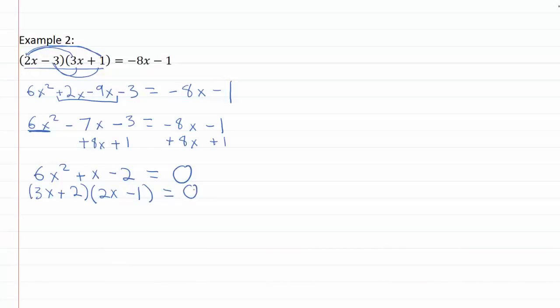So now I've factored and I can take each factor and set it equal to zero. Three x plus two equals zero, two x minus one equals zero. And then the last step is just to go ahead and solve for x. Divide both sides by three, x equals negative two thirds.